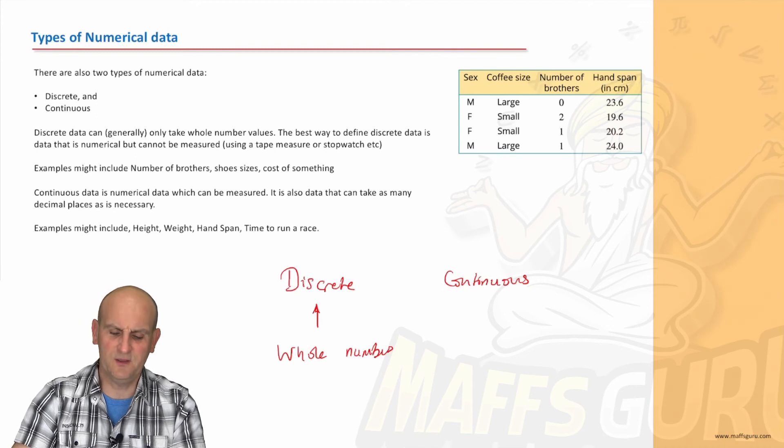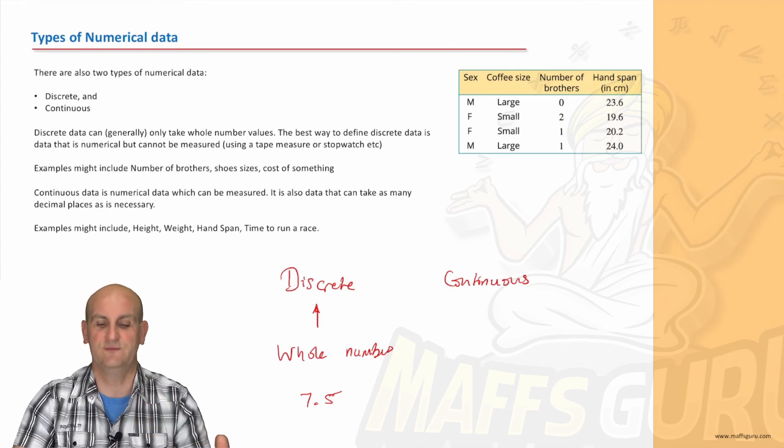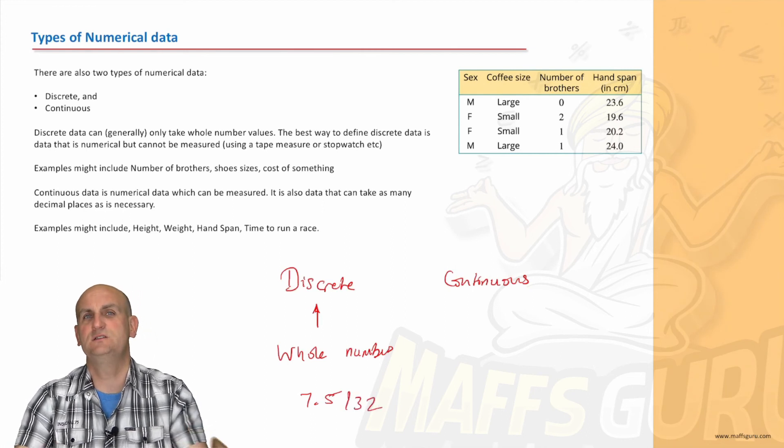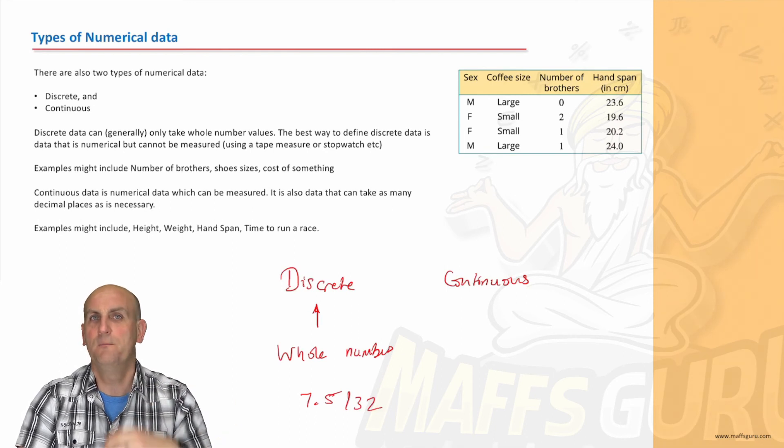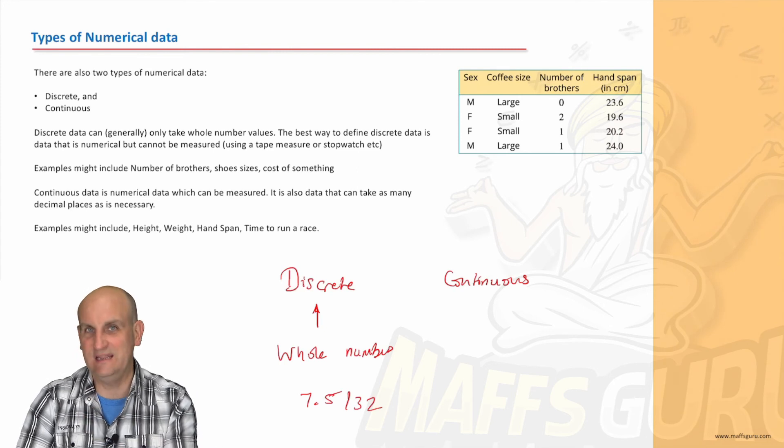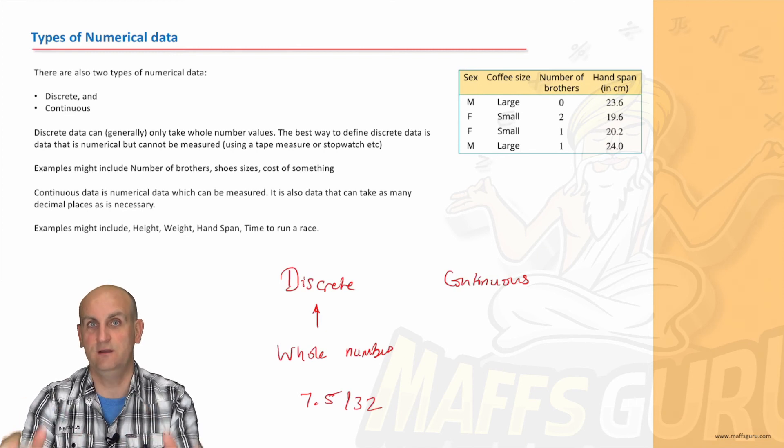But again, that's not a decimal number in the sense of we could have a 7.5132 shoe. For some reason, someone's just said, oh, we need a shoe size between 7 and 8, and we'll call it a 7.5. But you cannot get a 7.3 shoe. You cannot get a 7.8 shoe. So in that situation, shoe sizes are discrete data, because there's not a decimal representation.